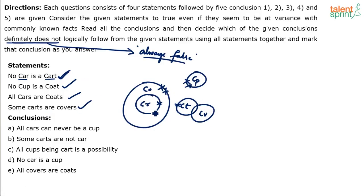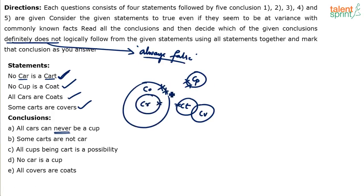To recap: no car is a cart, no cup is a coat, all cars are coats, some carts are covers. Now read the conclusions. 'All cars can never be a cup' — is this definitely false? All cars can never be a cup because cars are completely surrounded by coats, and coats and cups do not touch each other. So not even one car can be a cup. Therefore, 'all cars can never be a cup' is TRUE.